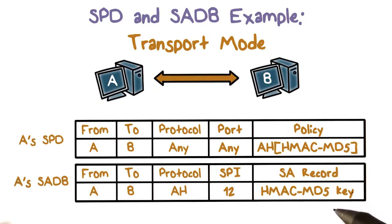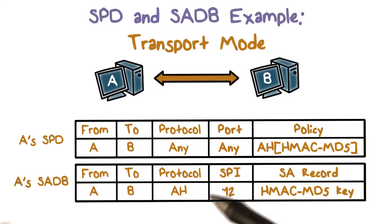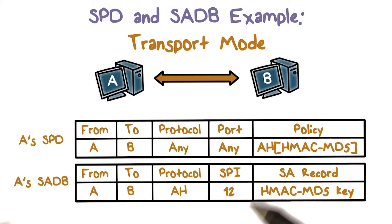The negotiated parameters between A and B are stored in an SA in both A and B's SADB. For A's SADB, it stores a secret key for HMAC, and an SPI for looking up the SA in B's SADB. Then when A sends out traffic to B, it can include this SPI in the IPsec header, so that B can use it to look up the SA and unprocess the traffic.